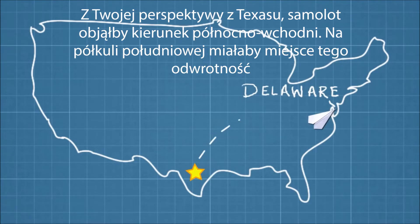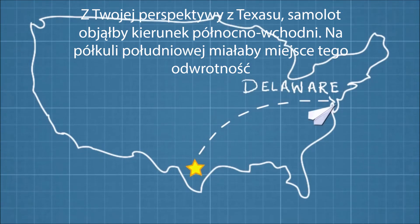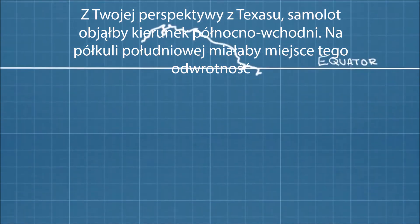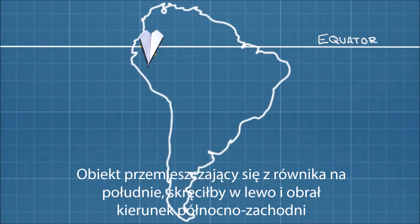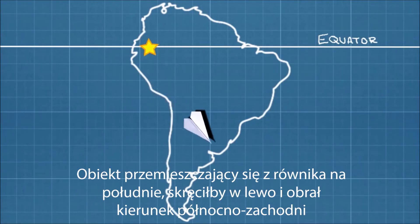So from your point of view in Texas, the plane would have taken a curved path to the right. The opposite would happen in the southern hemisphere — an object traveling from the equator to the south would get deflected to the left.